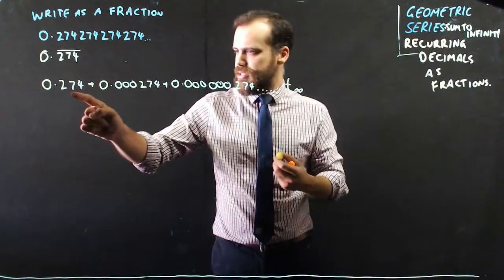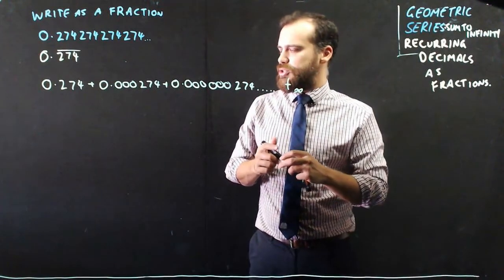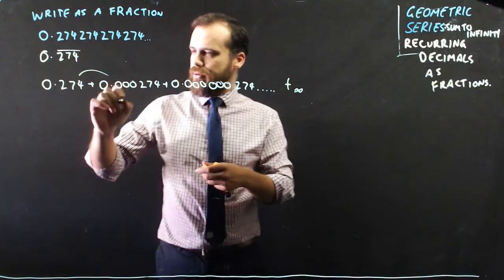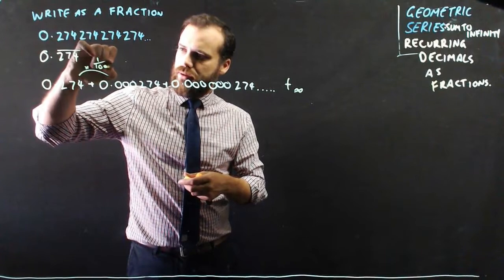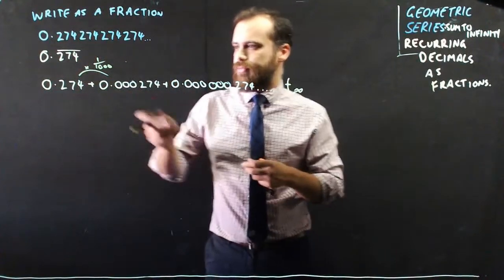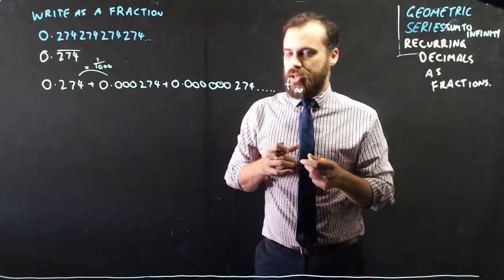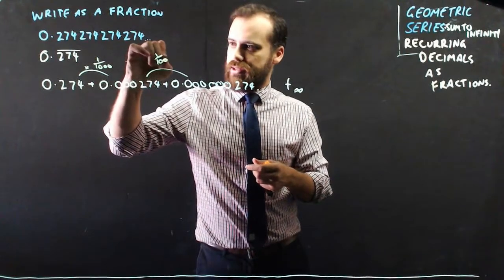To take this number and turn it into this number, you would need to be multiplying it by 1/1000. Or another way is to take this and divide it by that, and you'll find the common ratio is 1/1000.